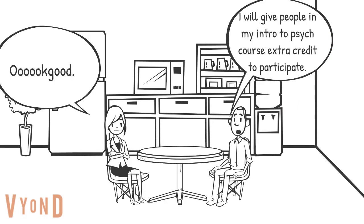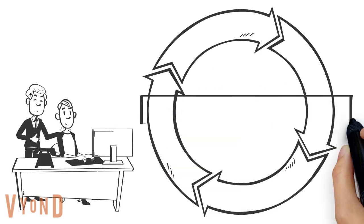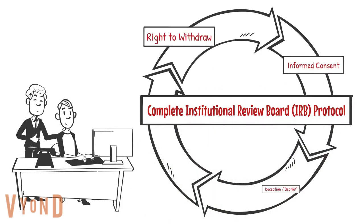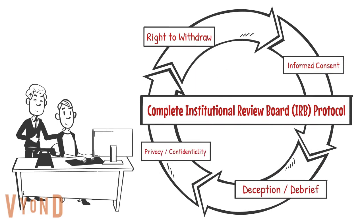Bill plans to recruit people for the study from his intro to psych course by offering them extra credit, and Dr. Smith says okay, good. Bill must send a protocol or document to his university's Institutional Review Board, or IRB — a division at a university which helps determine if a researcher's study is ethical and specifically not doing any harm or taking advantage of participants.